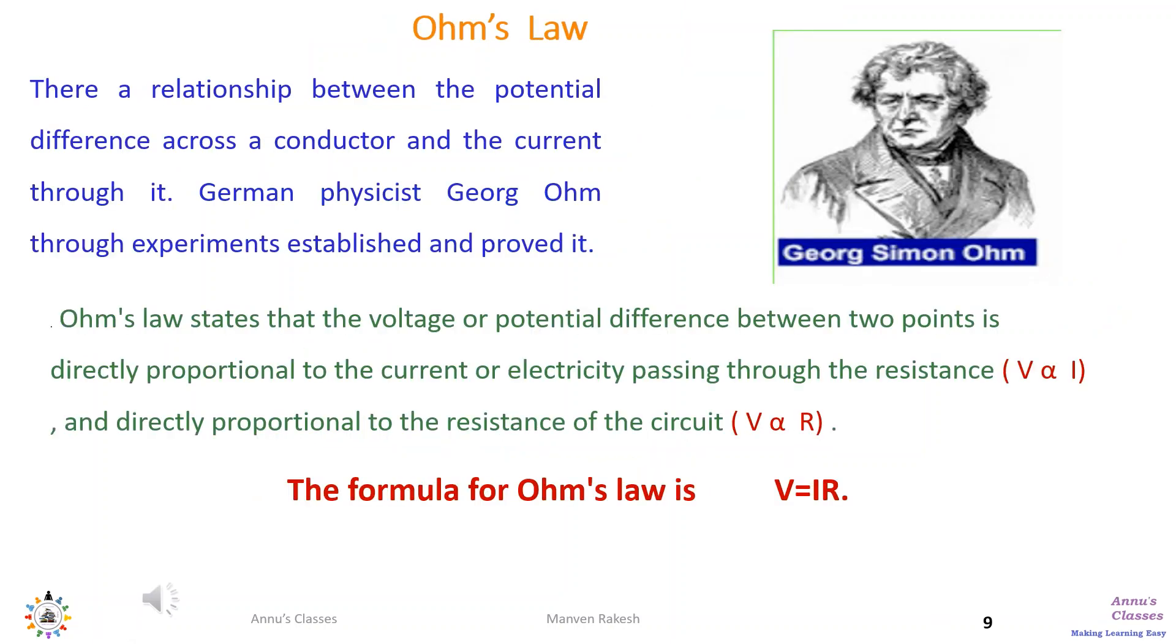German physicist George Ohm through experiments proved there is a relationship between the potential difference across a conductor and the current flowing through it. He proved that potential difference across a conductor depends on two factors: I, the current, and the resistance. So he gave the formula V is equal to IR, which is known as Ohm's law.